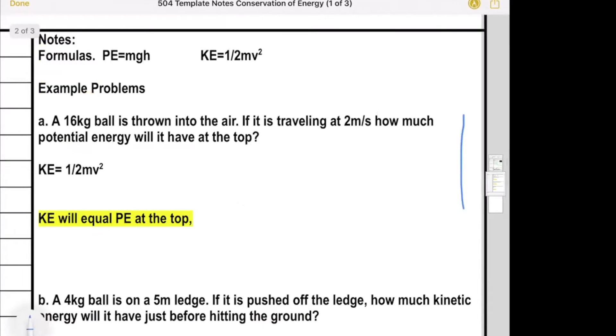So if you want to find the kinetic energy of the ball, it was one half times the mass, which was 16 kilograms, times the velocity squared, which is two meters a second squared. So you've got one half times 16 times four. That should be 32 joules. Now this conservation of energy says that the KE is going to equal the PE. So if the KE is 32 joules, the PE at the top of the path should be the same, 32 joules.